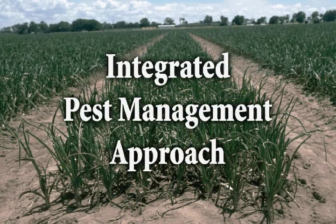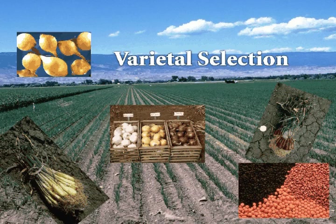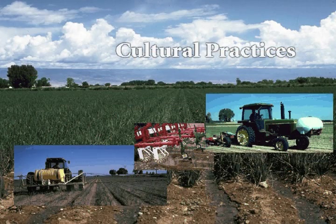In summary, follow sound integrated pest management principles to produce and protect the onion crop. Plant high-quality seed and transplants in well-prepared seedbeds during the appropriate time period for your area. Select productive, adapted varieties that will mature within the normal growing period in the area. Follow a moderate fertility program and timely irrigations as needed by the crop.